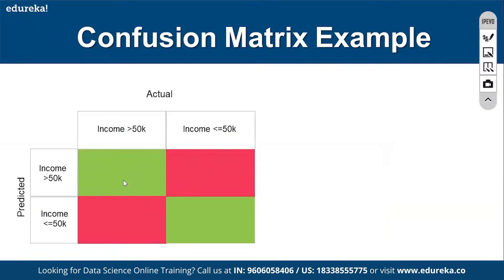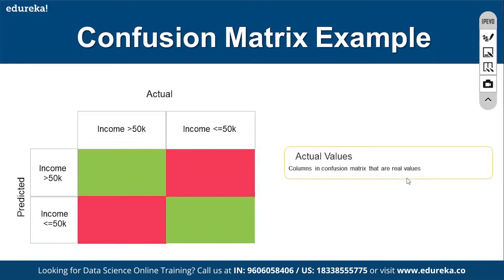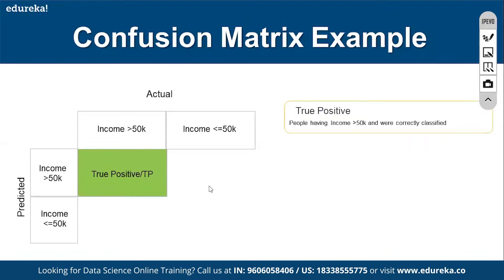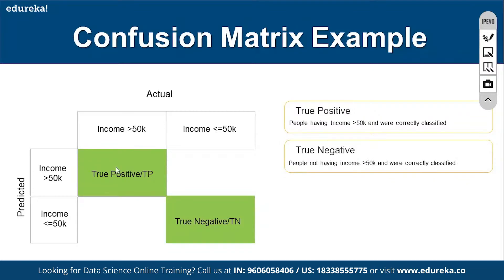As a machine learning engineer we need to evaluate the performance of our model. We have the actual values from the input feed and the predicted values from the model. True Positive means the input is greater than 50K and the model also predicted greater than 50K. True Negative means the input is less than 50K and the model also predicted less than 50K — both are correctly classified.